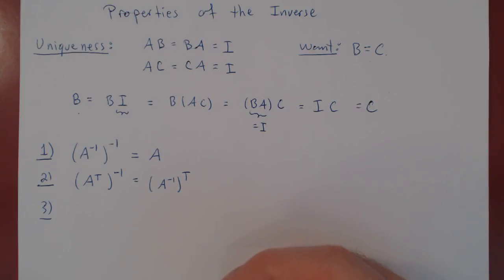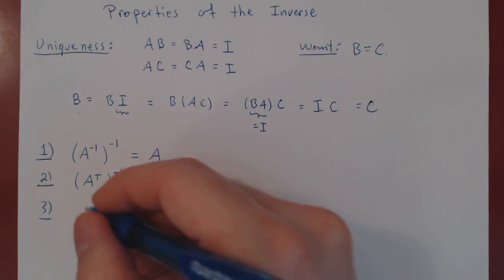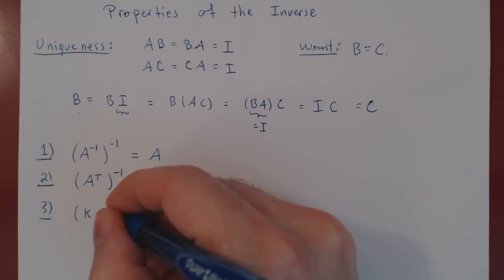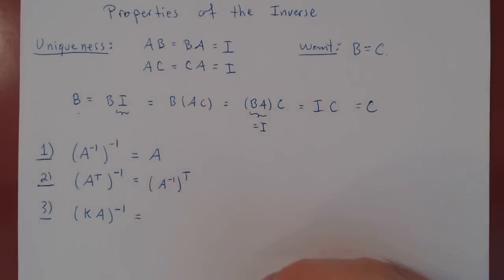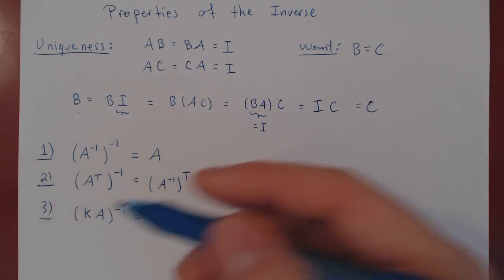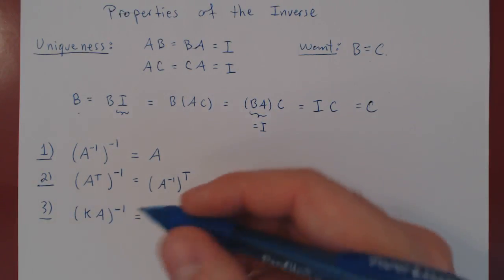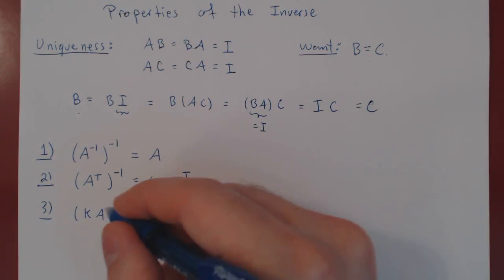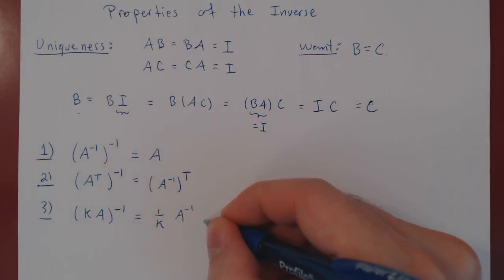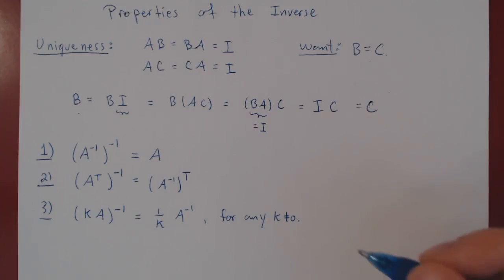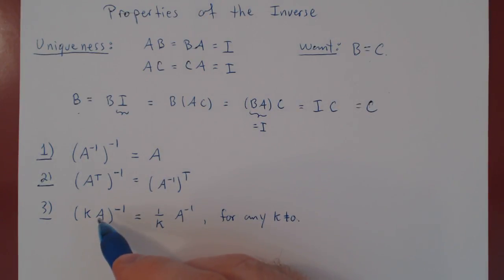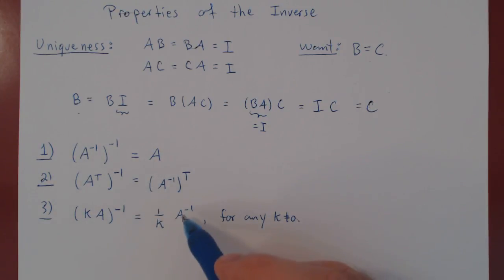Property 3: what if you multiply an invertible matrix A by a non-zero real number K? The result is invertible, and its inverse is simply 1 over K times A inverse — since K is a real number, its inverse is 1 over itself. So for any non-zero real number K, any non-zero multiple of an invertible matrix is also invertible, and the inverse of KA is (1/K) A inverse.